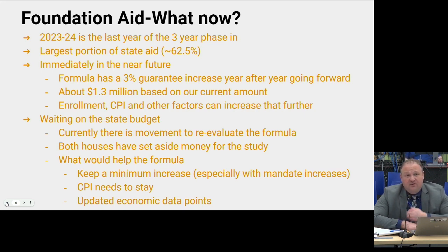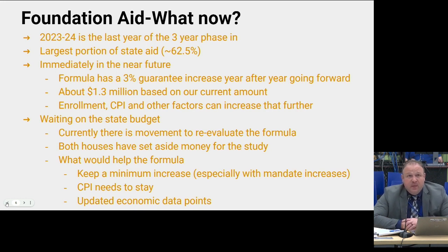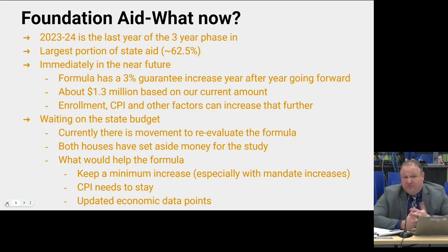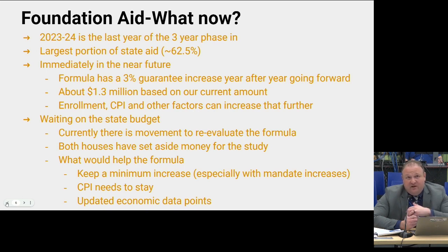What happens next? The formula guarantees a three percent increase year after year going forward. Based on our current amount, that's about 1.3 million dollars. But enrollments change, the Consumer Price Index plays into the formula, and other weightings can increase that overall amount further. For example, this year we probably get three percent plus eight percent from the CPI — something like an 11 percent effective increase. And if we had an influx of secondary students, those kids are weighted more, which would also change the formula.